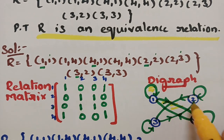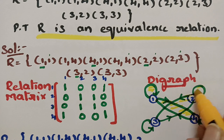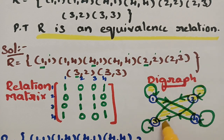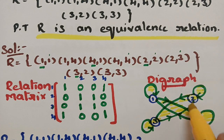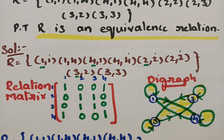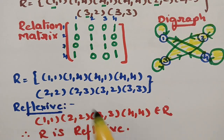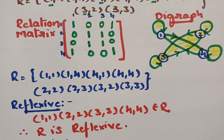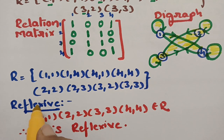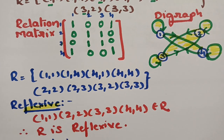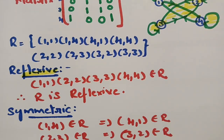This is how we have to show a relation through the relation matrix as well as the digraph. Now we have to show that it is an equivalence relation — we have to show that this relation is reflexive, symmetric, and transitive, so that it will be an equivalence relation.